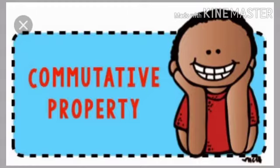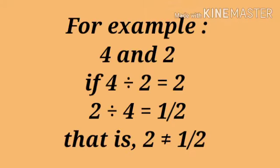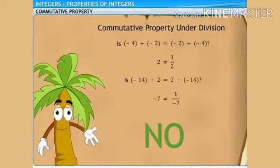Commutative property means a change in the order of integers during the operation does not change the answer. Testing: 4 divided by 2 equals 2, while 2 divided by 4 equals 1/2 — both are different. Also, minus 4 divided by minus 2 is 2, but minus 2 divided by minus 4 is 1/2. And minus 14 divided by 2 is minus 7, while 2 divided by minus 14 is minus 1/7. Therefore, division of integers is not commutative.